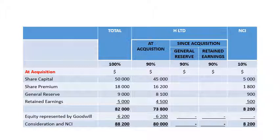The consideration paid was $80,000. H Limited's 90% share of net assets is $73,800 and NCI at 10% is $8,200. Since we paid more than the 90% net asset value by $6,200, that $6,200 represents goodwill. The key figures here are: goodwill $6,200 and NCI $8,200.